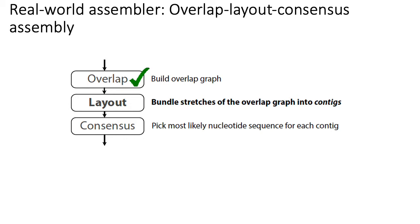The overlap layout consensus assembly has three steps. The first is to build an overlap graph, which is what we've talked about. Step two is to perform what's called a layout — you take the original overlap graph, simplify it, and identify where unambiguously continuous DNA sequences are and where repetitive sequences might be, such as cycles in the overlap graph. The final step involves estimating what's called the consensus sequence — the most likely genomic sequence from the original genome before sequencing.